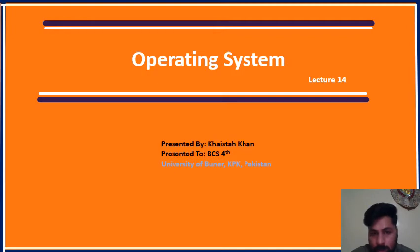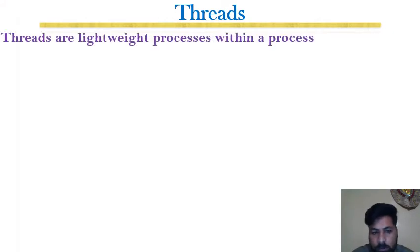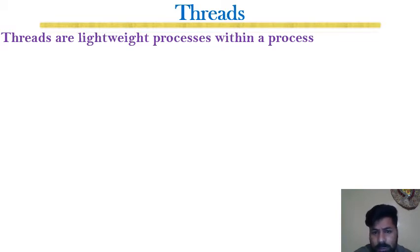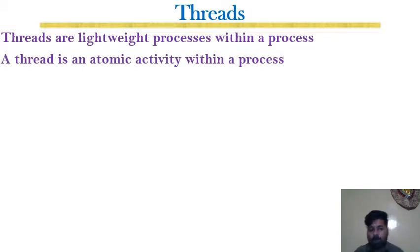In this lecture we'll discuss threads. What is basically a thread? Threads are lightweight processes within a process. As we have discussed a lot about processes — how they are created, managed, scheduled, executed, terminated, and how a process creates other processes — now a process itself consists of loosely dependent sub-processes called threads. A thread is an atomic activity within a process.